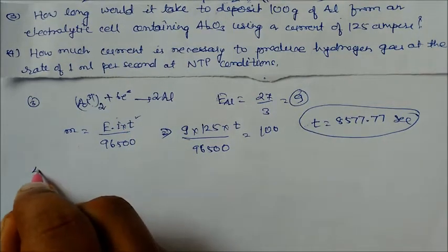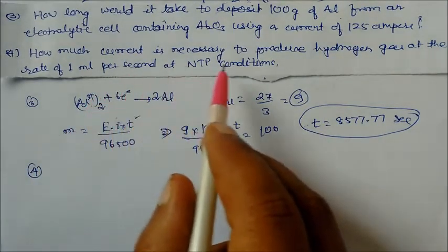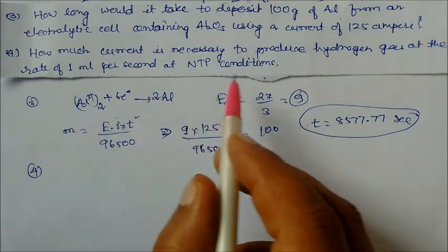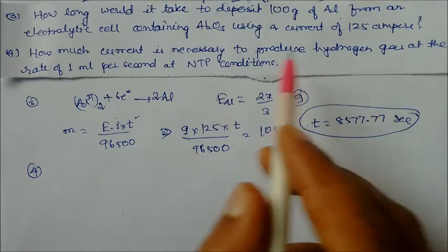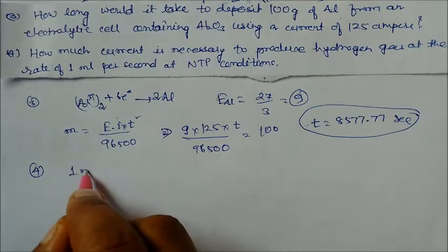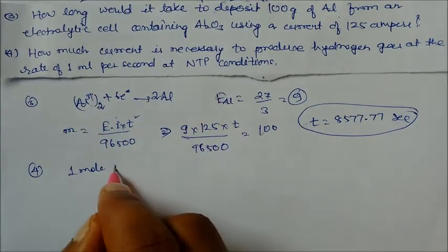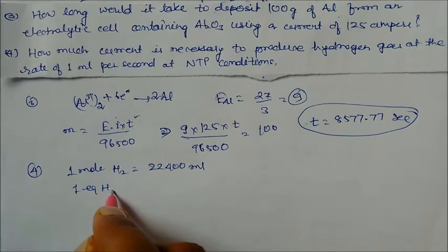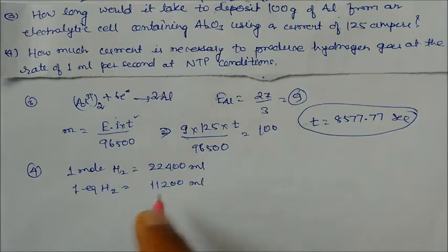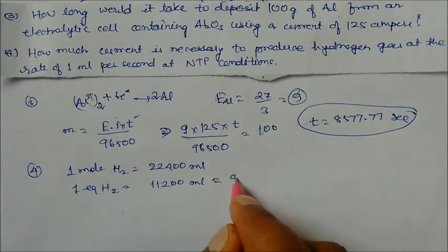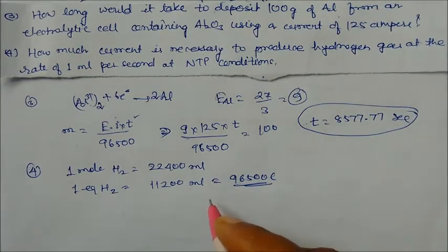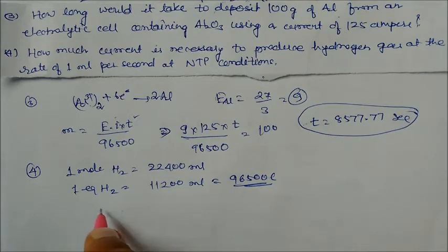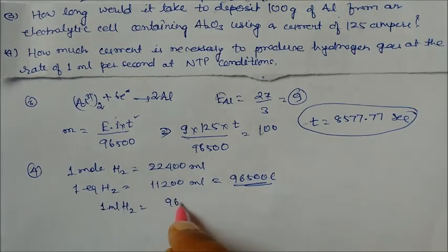Question 4: How much current is necessary to produce hydrogen gas at the rate of 1 ml per second at NTP? One mole of hydrogen = 22400 ml. One equivalent of hydrogen = 11200 ml, and this equals 96500 coulombs — one equivalent equals one Faraday. So for 1 ml of hydrogen, total Faradays required = 96500 / 11200.